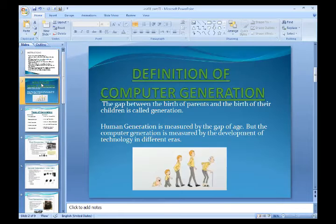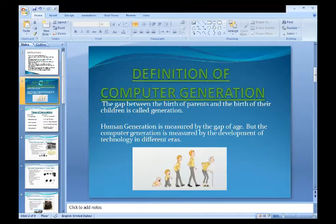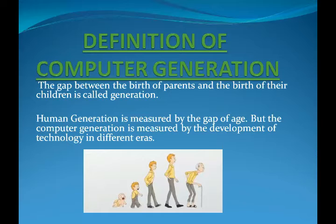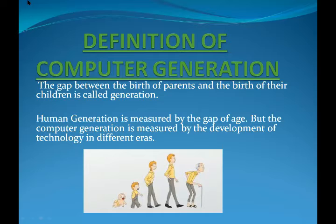Definition of computer generation: for the old generation, the gap between the birth of parents and the birth of their children is called a generation. Human generation is measured by the gap of age. But computer generation is measured by the development of technology in different eras.